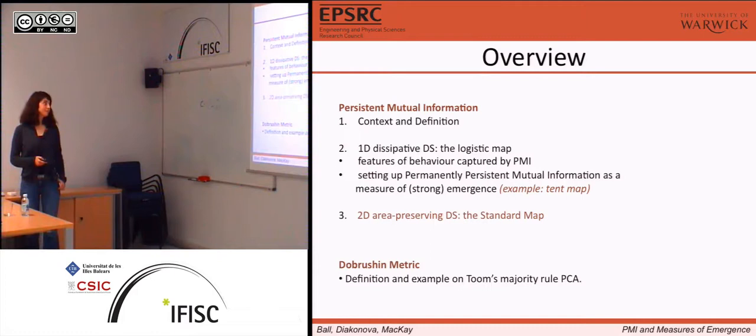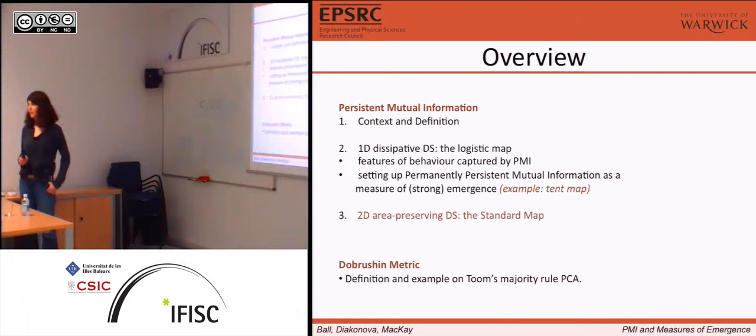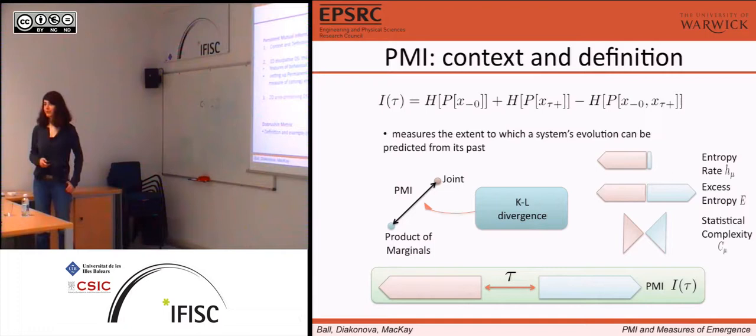So first we'll define it. It's basically a measure of emergence and it's a function of probabilities. We're going to use that function on data sets generated by dynamical systems — a one-dimensional dynamical system, or actually perhaps two one-dimensional dynamical systems, the distributed ones. And then, for the most part, we'll talk about the standard map, which is a two-dimensional area-preserving dynamical system.